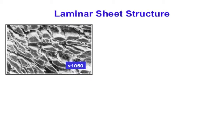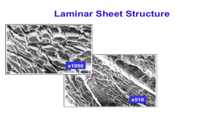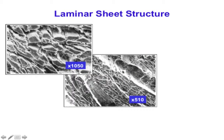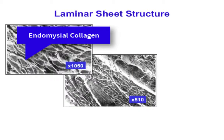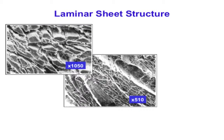There is an equivalent to fascicles in skeletal muscle, but they're not roughly circular bundles. Instead, there are layers or laminae of cardiac myocytes, organized by the extracellular matrix. The collagen matrix shares nomenclature with skeletal muscle: the paramesial collagen wraps layers of cells, the endomesial collagen surrounds each cell and connects cell to cell, and the epomesial collagen covers the whole outer surface.